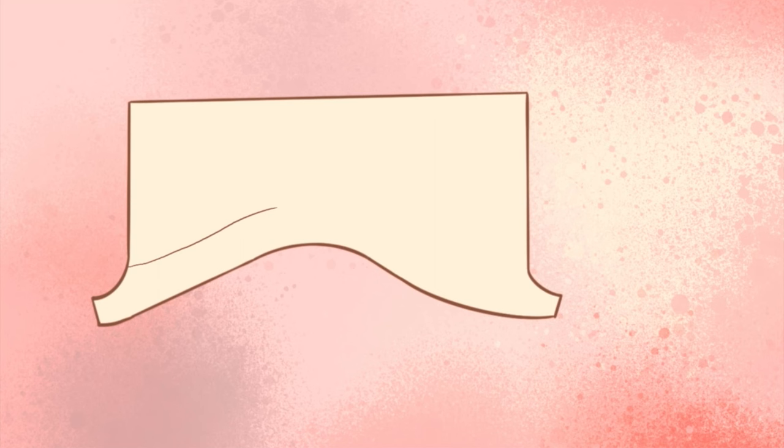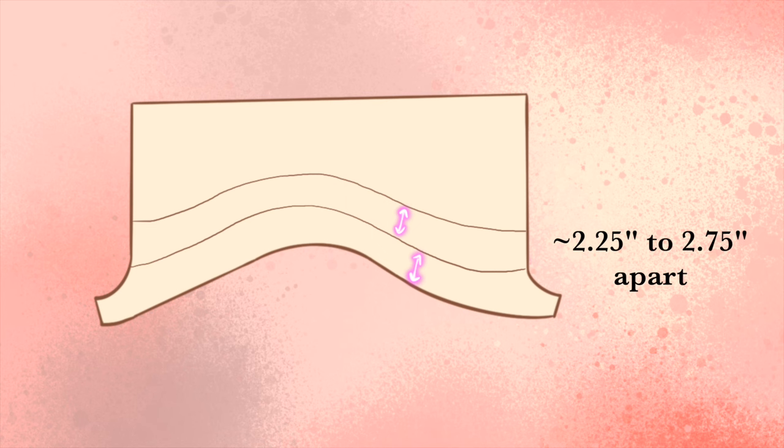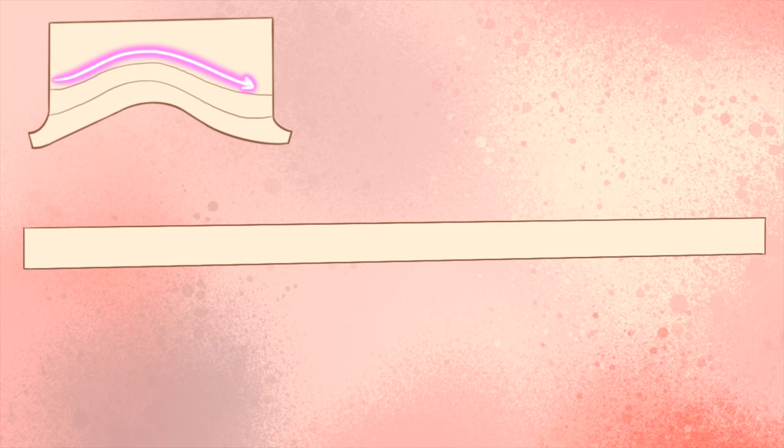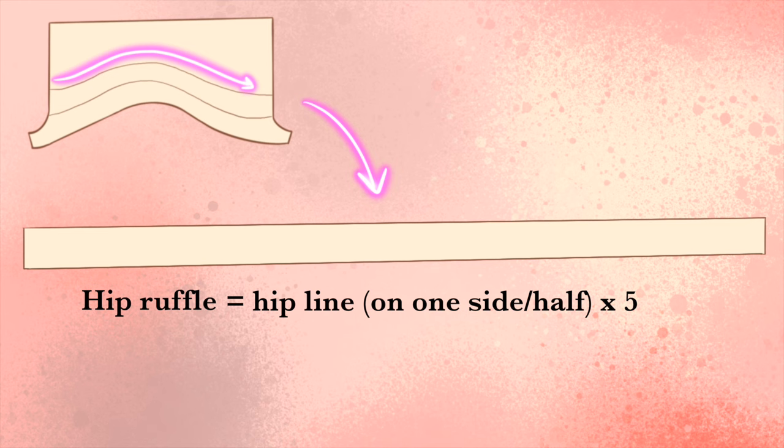Now to find the measurement for the hip ruffles, you'll want to mark your ruffle lines on your bloomers and figure out how long those are. For the smallest bloomers, the lines are about 2.25 inches apart, and for the larger ones, they're about 2.75 inches apart. Please note that toward the crotch seam, these lines rise slightly so they aren't too far down into the curve. So to find out how much length you'll need for each hip ruffle, measure this ruffle line on one side, then multiply that by 5. You'll need two of these hip ruffles.